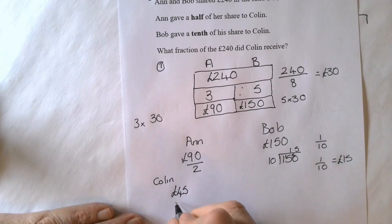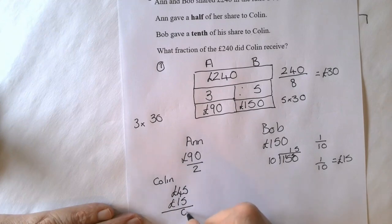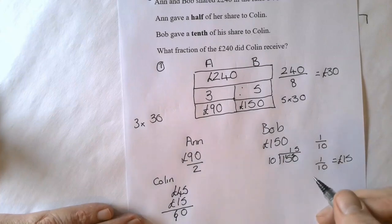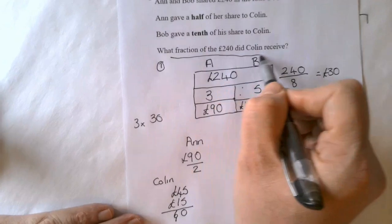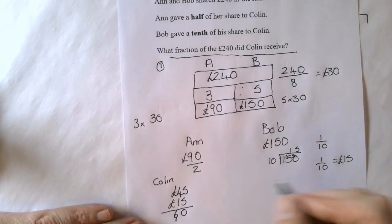So that's another 15 pounds to Colin now. So Colin altogether 5 plus 5 equals 10. Put the 1 down there. 4 plus 1 equals 5 plus 1 equals 6. So Colin's got 60 pounds.